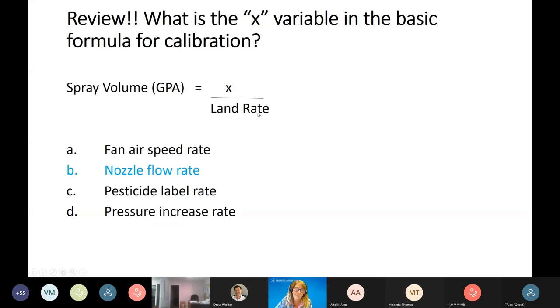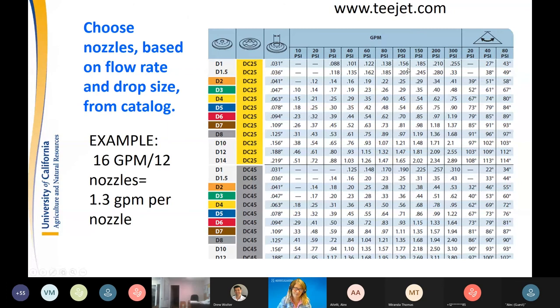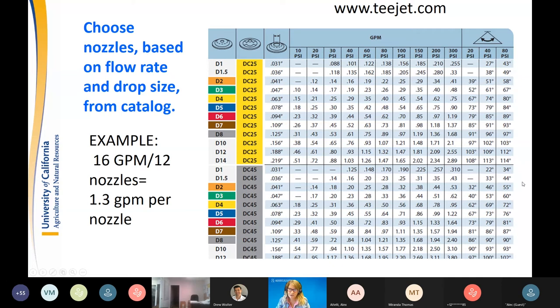Back to our example: shooting for 200 gallons per acre, land rate of 0.08 acres per minute, calculated desired flow rate of 16 gallons per minute. If I have 12 nozzles on my sprayer all delivering the same flow rate, I'd be looking for a nozzle delivering about 1.3 gallons per minute per nozzle. I recommend everyone have the nozzle flow rate chart for whatever nozzle setup they use — they're all available online.